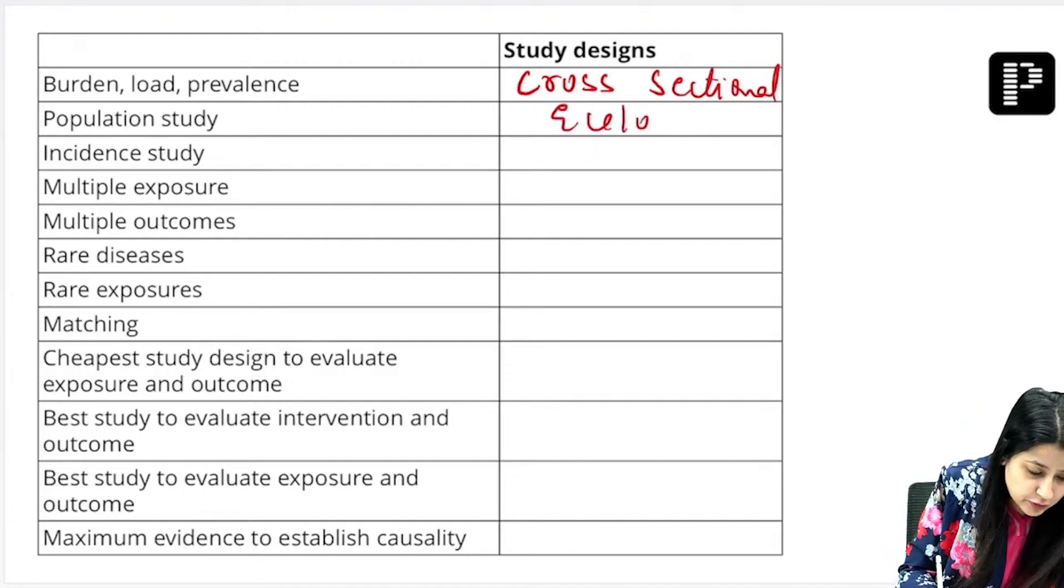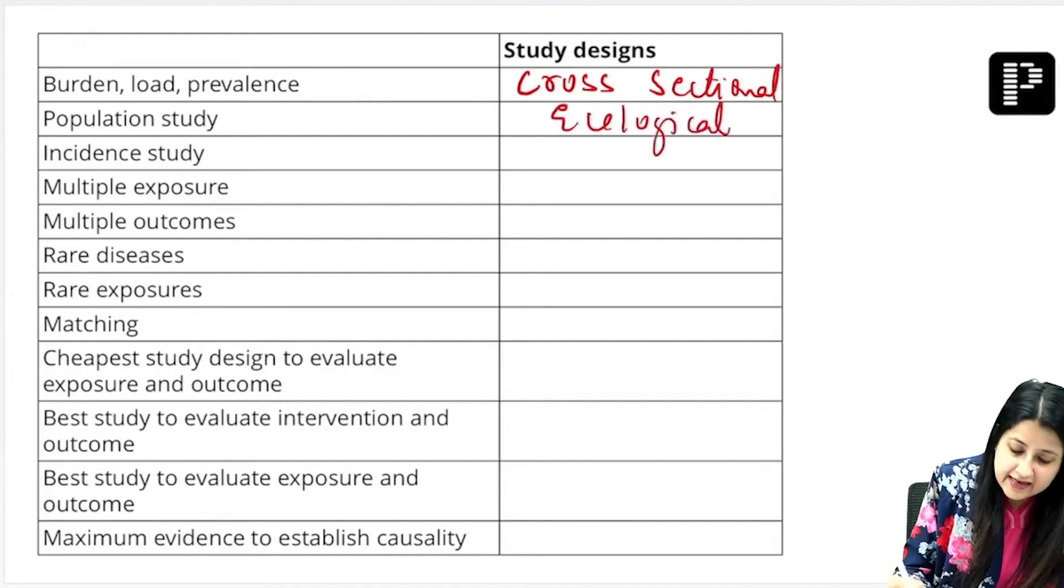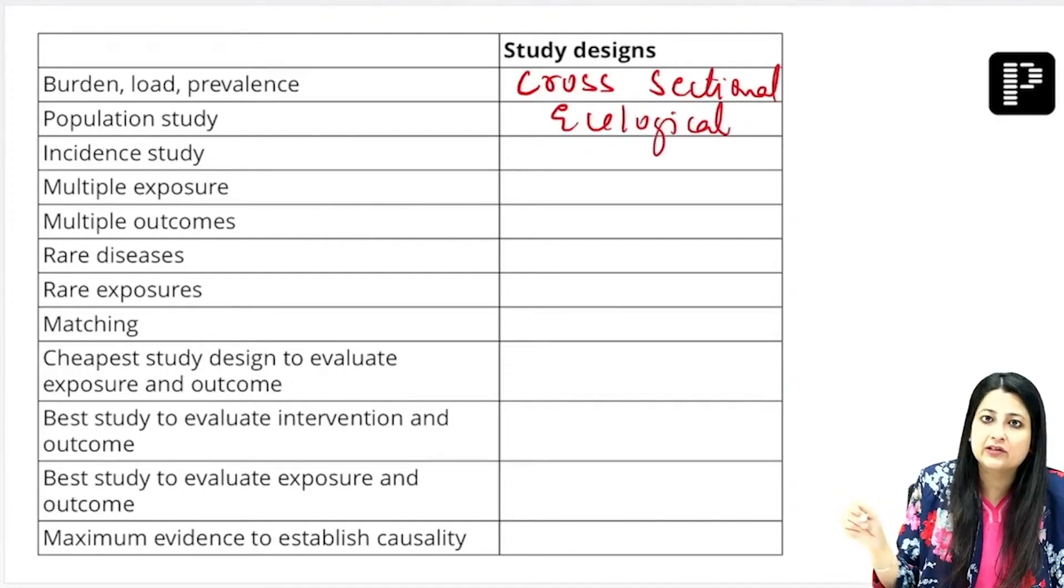Population study. If I say the buzzword population, which one will it be? Good guys, it's going to be ecological. Very good. Incidence study—if I say incidence, let's calculate the incidence.